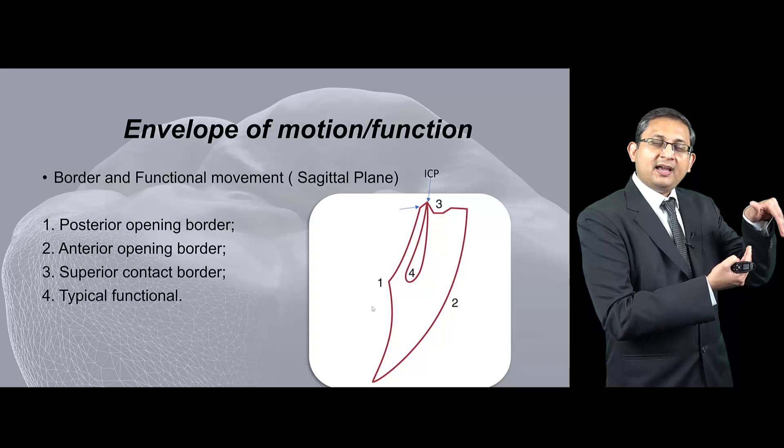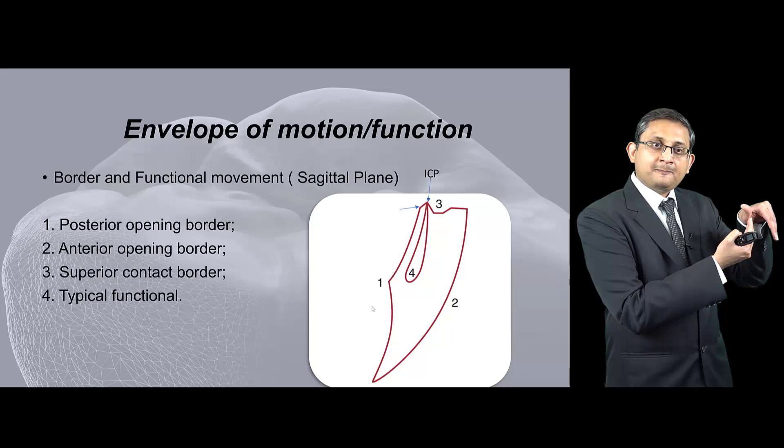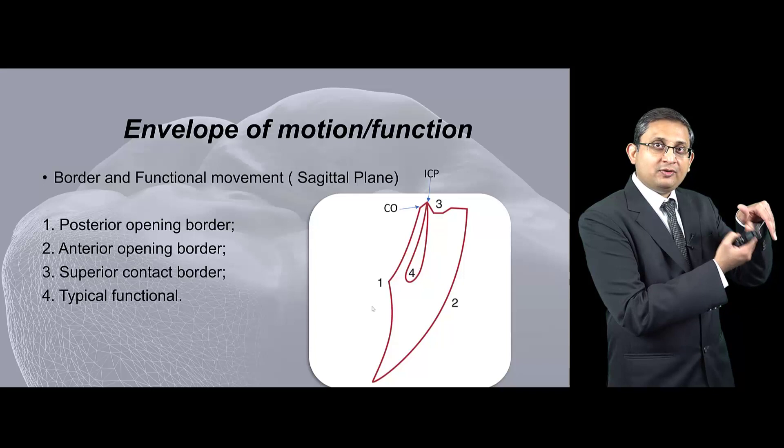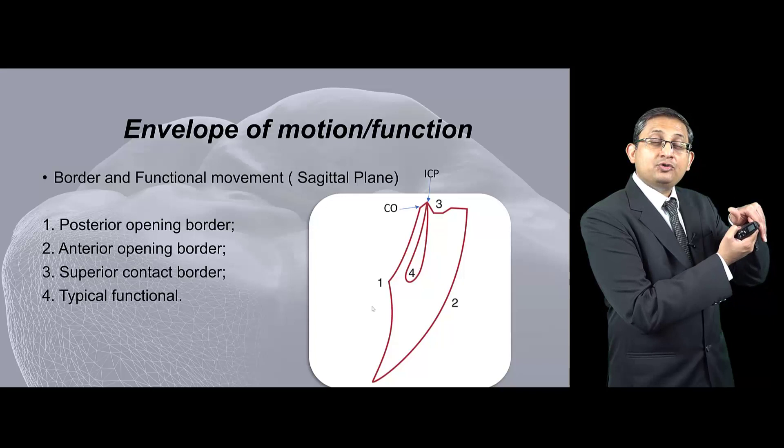And then when you close your teeth, you will see first translation movement and then at number one the jaw will start rotating inwards. Once the jaw is rotating, that's pure rotation movement. What will happen is the patient will contact the teeth in CO, that's the first point of contact, and then the teeth will slide forward.